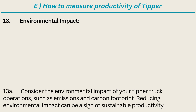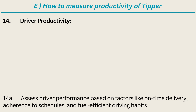13. Environmental Impact: consider the environmental impact of your tipper truck operations, such as emissions and carbon footprint — reducing environmental impact can be a sign of sustainable productivity. 14. Driver Productivity: assess driver performance based on factors like on-time delivery, adherence to schedules, and fuel-efficient driving habits.